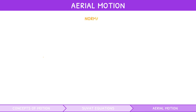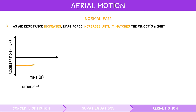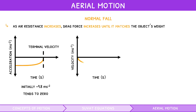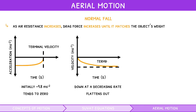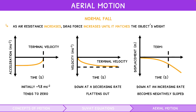During normal fall, the object experiences acceleration due to gravity. However, as air resistance increases, drag force increases until it matches the object's weight. Thus, acceleration is initially 9.8 metres per second squared and then tends to zero. At this point, terminal velocity is reached. Velocity curves down at a decreasing rate and flattens out to terminal velocity. Displacement curves down at an increasing rate and becomes negatively sloped at terminal velocity.